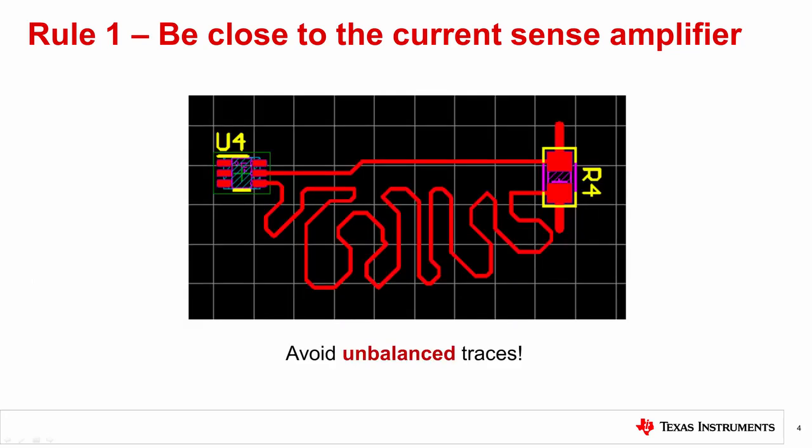Using traces of mismatched lengths is also not recommended for the same reasons as not using long traces. While the case shown here is extreme, it is important to note that mismatches in the trace resistance from the shunt resistor to the amplifier can create offsets due to the input bias currents present on the lines. These errors may be small, but it's best to avoid the issue altogether.